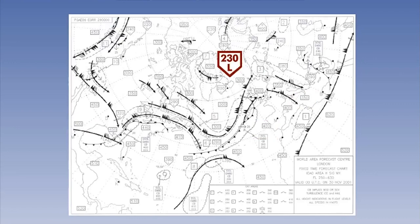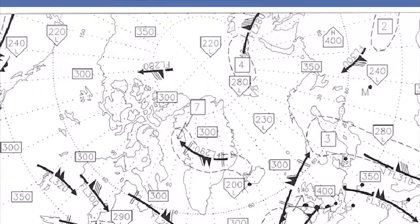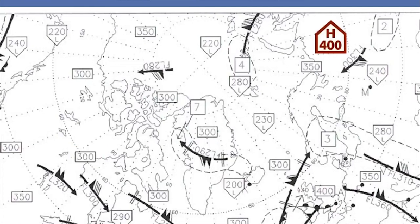These tropopause heights are indicated at a number of spot locations across each of the high-level charts. Tropopause heights are presented in flight levels, and when there is just one tropopause, this flight level is centred in a rectangular box. When several tropopauses are present, either an H or an L is added to the tropopause box to indicate whether the upper or lower tropopause height is displayed. In these cases, the rectangular box is expanded to include the additional symbol, and the box looks more like an arrowhead pointing up or down.